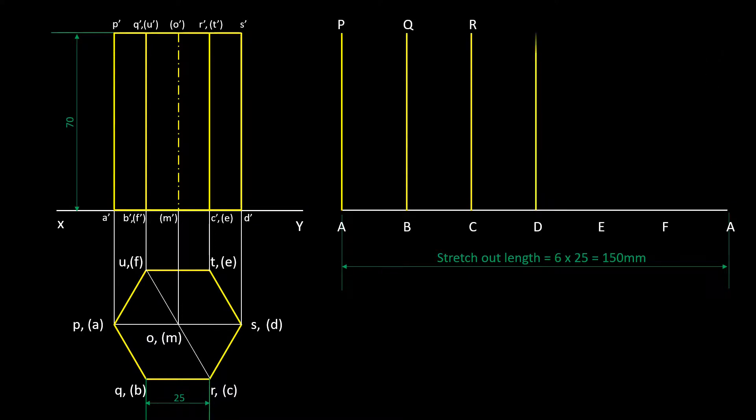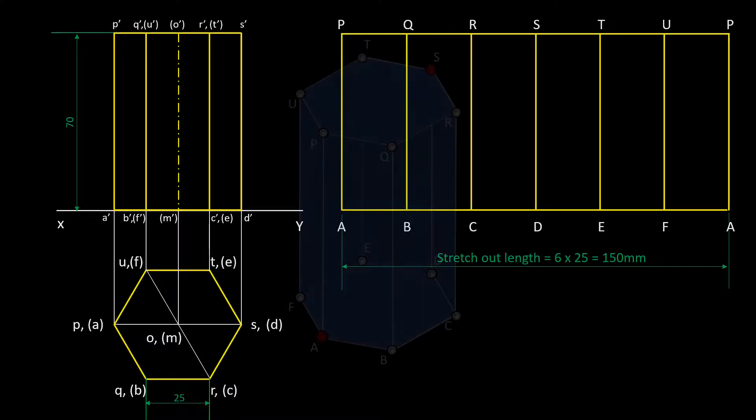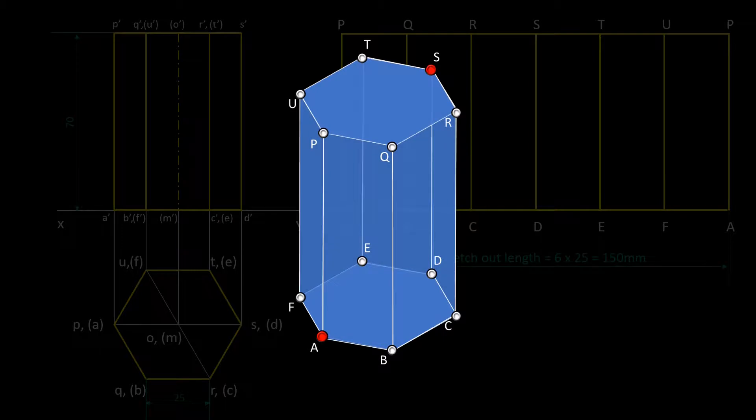Draw the vertical edges or fold lines and complete the pattern. Suppose the ant starts moving from the base corner A, the diametrically opposite corner of top face will be corner S. So the shortest path from corner A to corner S will be a straight line on the developed pattern from A to S.